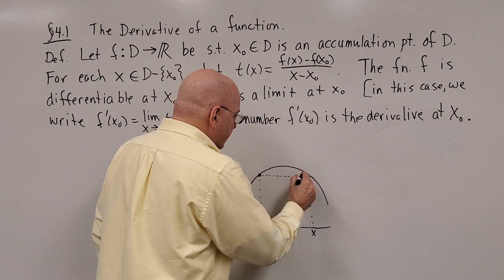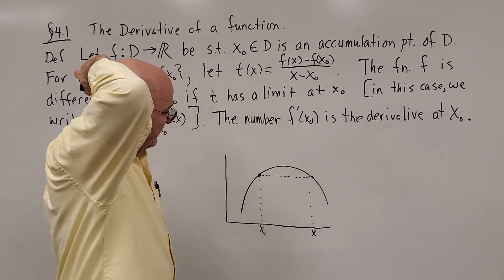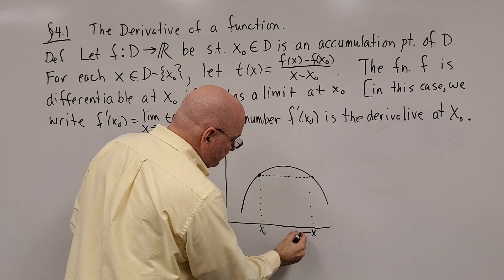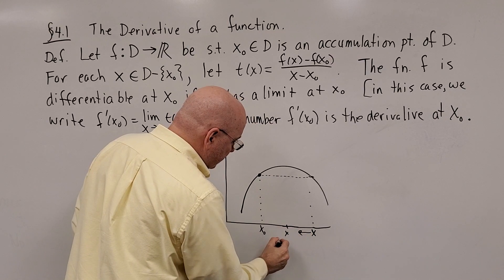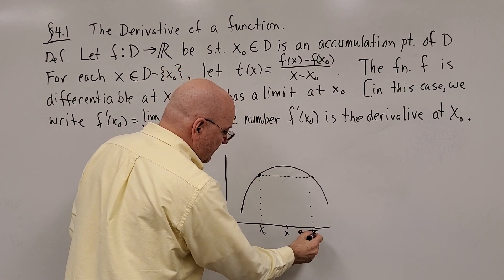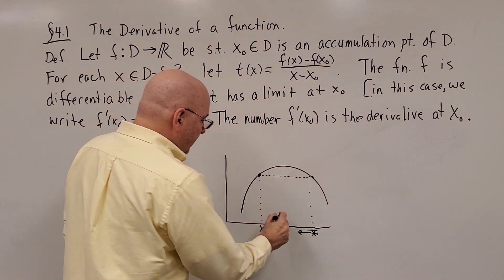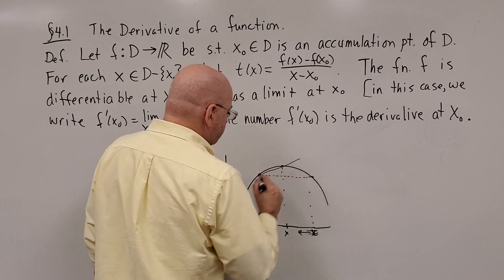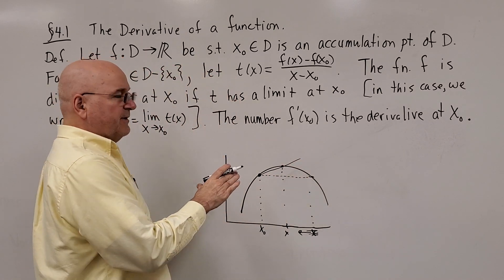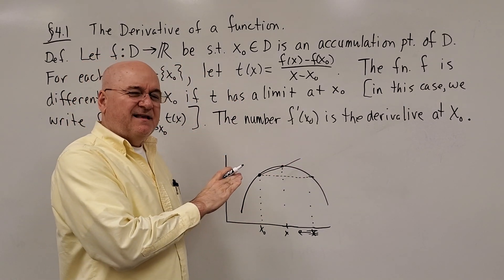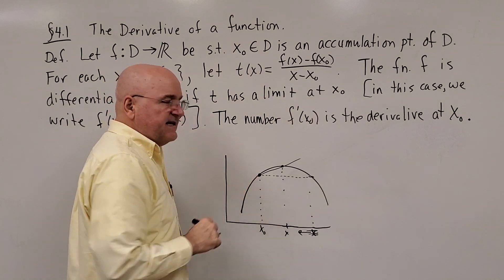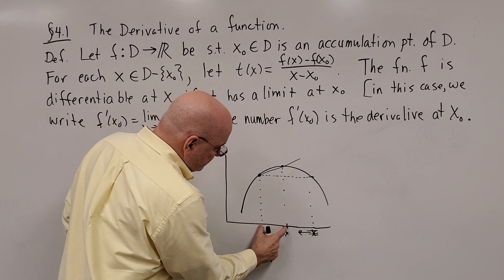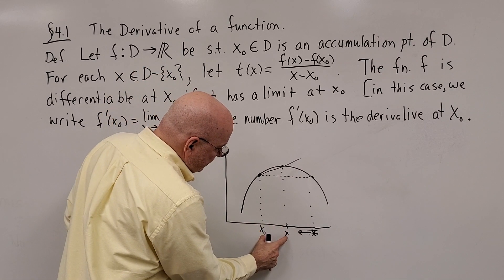This line going through two points is called a secant line. But notice what happens as I get x closer. Let's move this x, get rid of him and put it here now. I'll cross him out and connect this to get another secant line. Notice that we're approaching the line that is tangent to the graph at x naught.